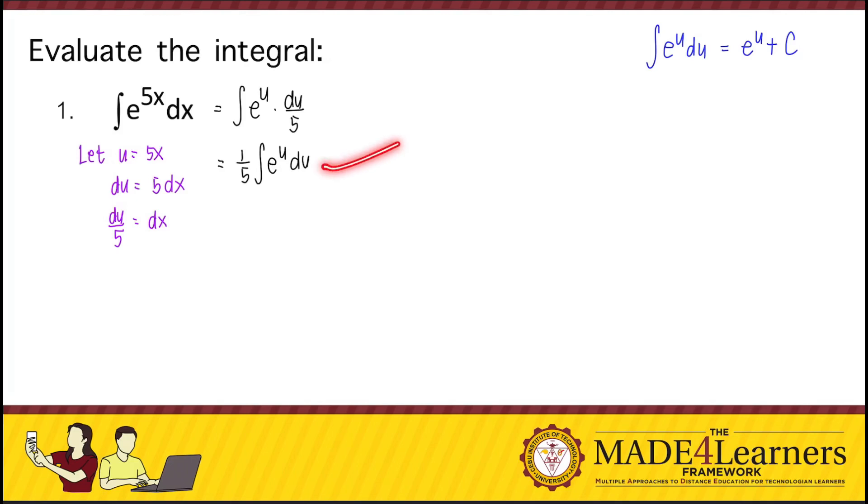We now have exactly the same form as the formula. Integrating it, we get e to the power u plus C. We bring it back to its original variable: one-fifth e to the power 5x plus C.